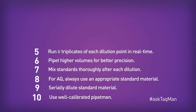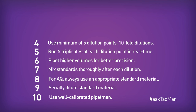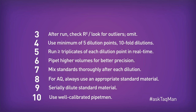Number 6: pipet higher volumes for better precision. Number 5: run at least triplicates of each dilution point in real-time. Number 4: use a minimum of 5 dilution points, each of which has at least a tenfold dilution. Number 3: after the run, check your R-squared, look for outliers, and omit them.